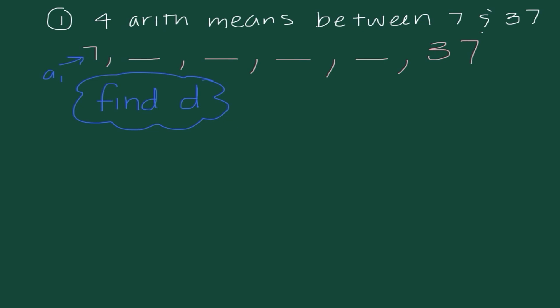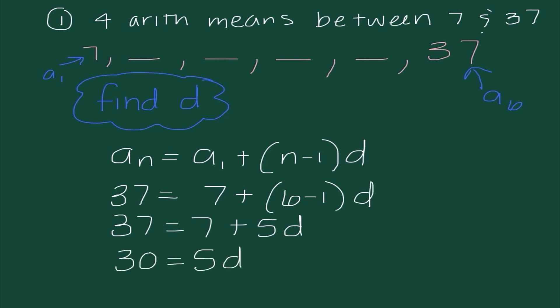So we need to find our common difference. And to do that, we're going to say a sub 1 is 7. And if we look, 37 is our 6th term. So to figure out what this would be, it's the number of terms in between plus 2 because we have our first term and that term. So 4 plus 2 gives us 6. So just to recall, our formula is a sub n equals a sub 1 plus n minus 1 times d. So in this case, I'm going to say 37 equals 7 plus 6 minus 1 times d. So 37 equals 7 plus 5d. 30 equals 5d, which tells me that 6 is my common difference.